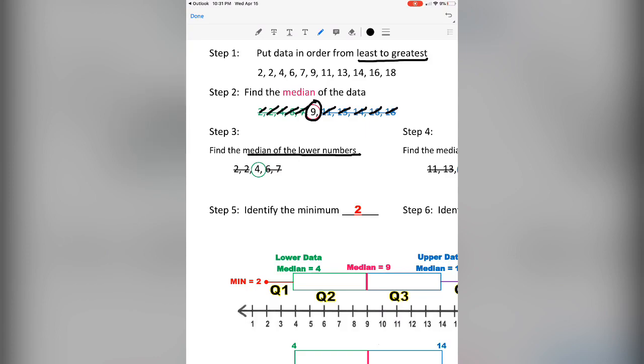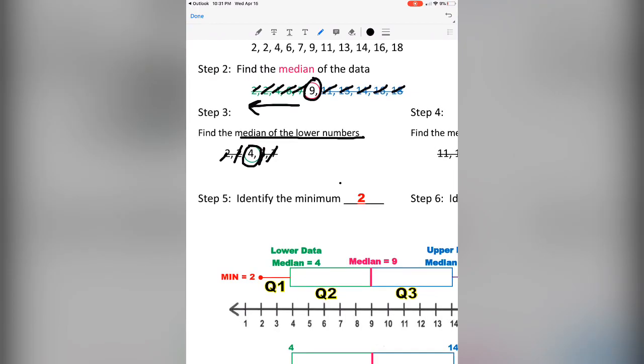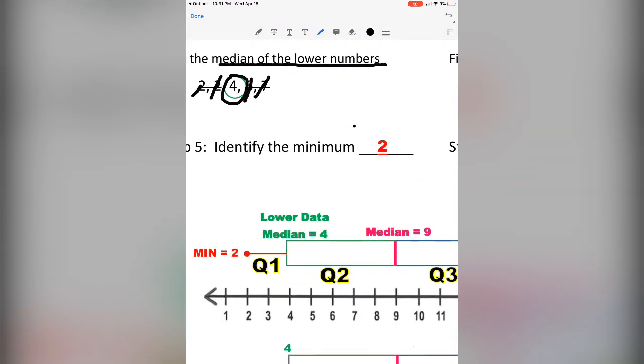These numbers are located to the left of the number 9. We're going to go through, cross out, and find the number that's in the middle. Again, in this case, it is 4. It will be represented by a line on the left-hand side of the box down here.